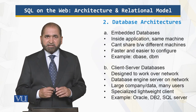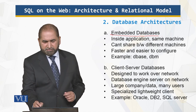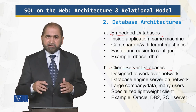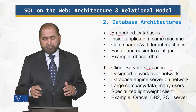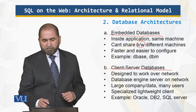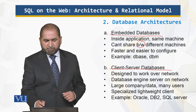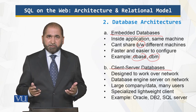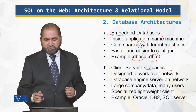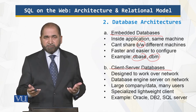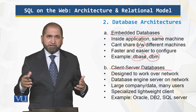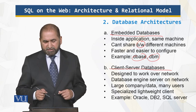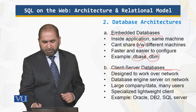There are two database architectures: embedded databases and client-server databases. Embedded databases are inside the application, on the same machine, and cannot be shared between different machines. Examples are DBS and DBM — they are faster and easier to configure, but multiple users cannot access them over the internet. Client-server databases are designed to work over the network and are ideal for the web.